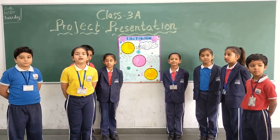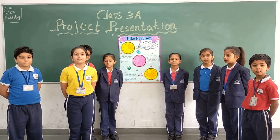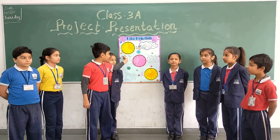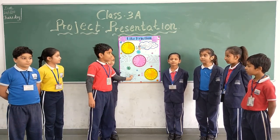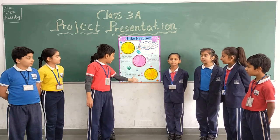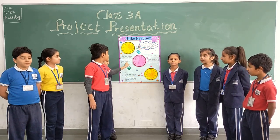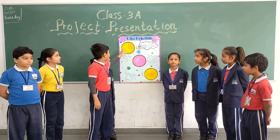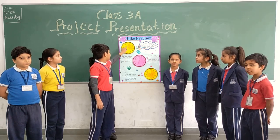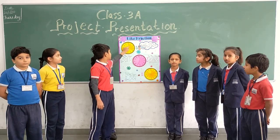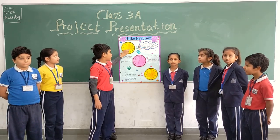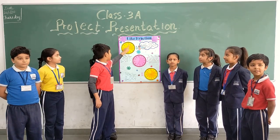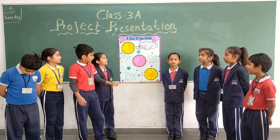Like fraction represents the different parts of the same object. If we explain it with an example, we take 3 clocks. In the first clock, we have divided it into 12 equal parts. So we take 12 as the denominator.